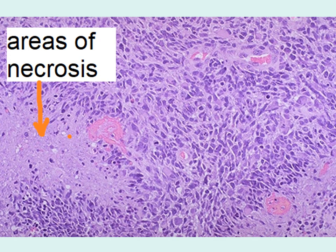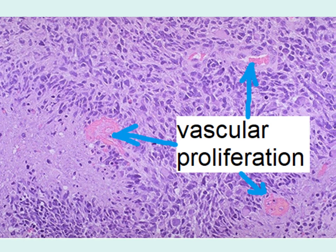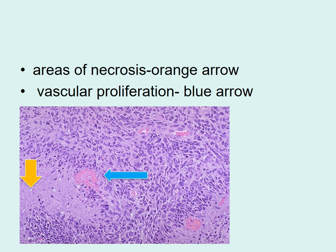Looking at the microscopic appearance of high-grade glioma, there are areas of necrosis with cell death leaving homogeneous pink areas, and there is vascular proliferation. So microscopically, the two key features are areas of necrosis and vascular proliferation.